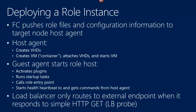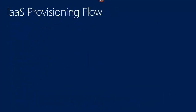Now let's talk about the steps to get your code and data down onto a server. The fabric controller pushes role file and configuration information to the target host, then creates the VHDs. A guest agent sitting inside your PaaS role starts your code, activates plug-ins like the RDP plug-in, runs your startup tasks, calls your role entry point, and starts a 15-second health heartbeat. The load balancer only routes to instances that are responding to the heartbeat. If the heartbeat is missed, the guest agent tells the host agent this VM is out of commission.